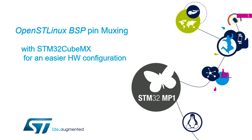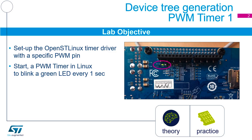It's time for a lab. We're going to look at creating a device tree so we can use a pin to do a function in the application. We're going to generate our device tree and add a timer one PWM signal on timer number one. That PWM is connected to an LED, and we're going to set that LED to blink once every second using a dual Cortex-A7.